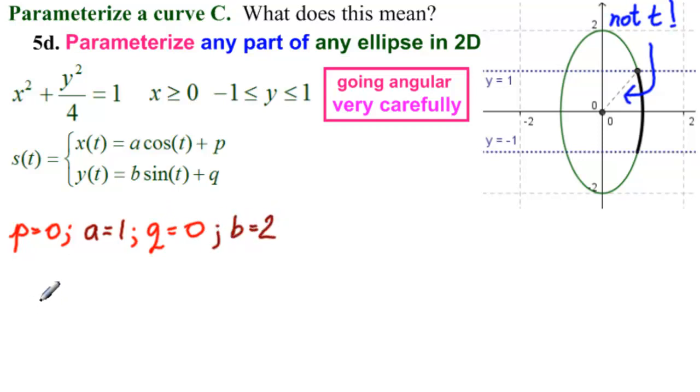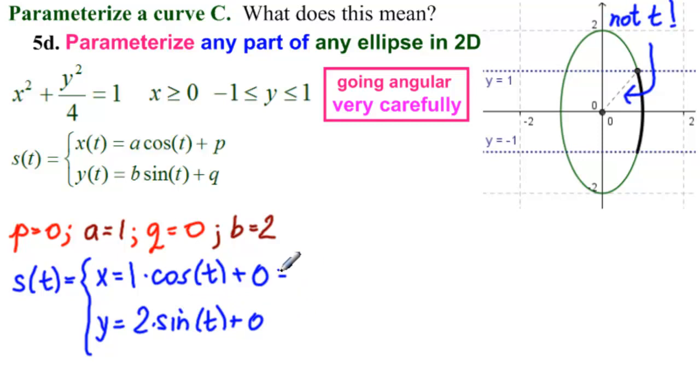So we can find our parameterization here. s of t equals, our x function is a is 1, cosine of t plus 0, p is 0, y equals 2 times sine of t plus 0. So we will rewrite that. x equals cosine of t, and y equals 2 sine of t.